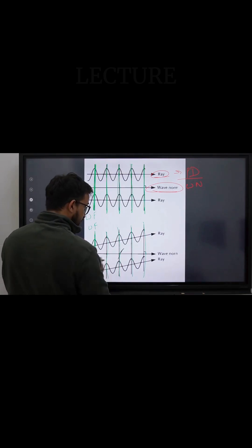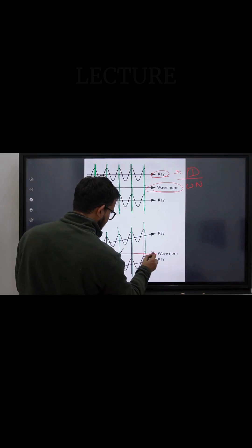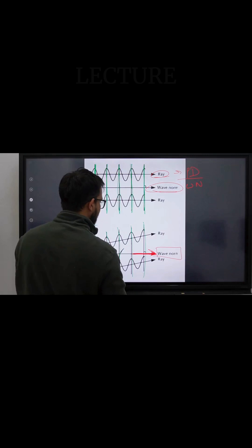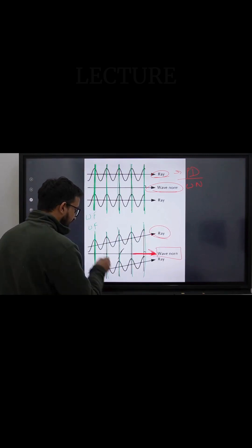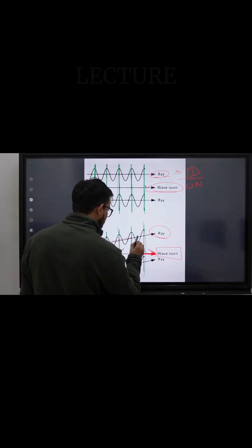Now, what is the direction that is perpendicular to these wave fronts? It is this direction. This direction is the direction of my wave normal. But what is the direction of my ray itself? The direction of my ray is actually in this direction.